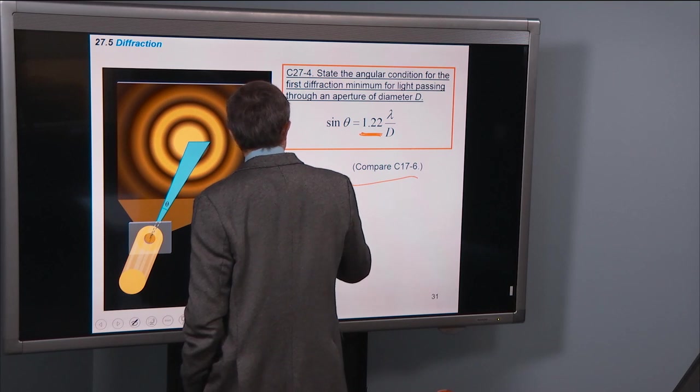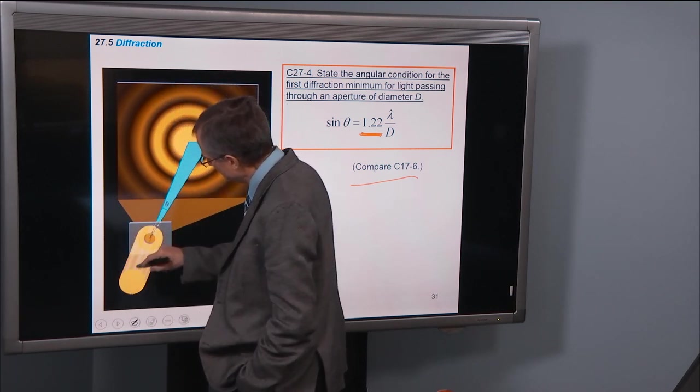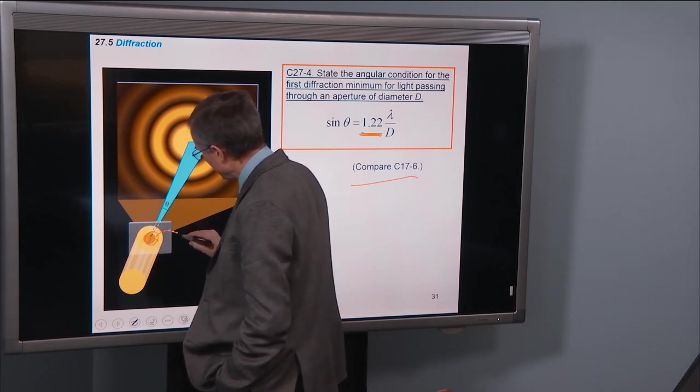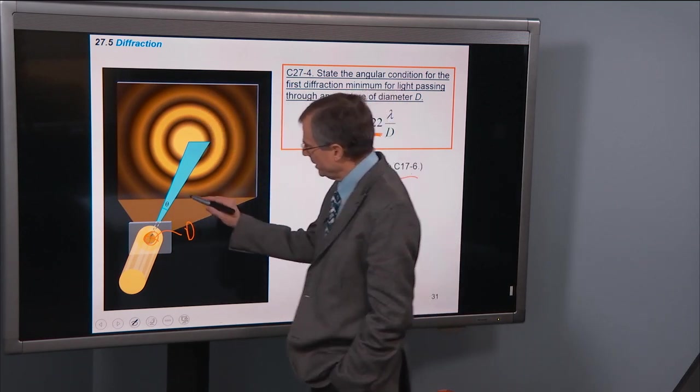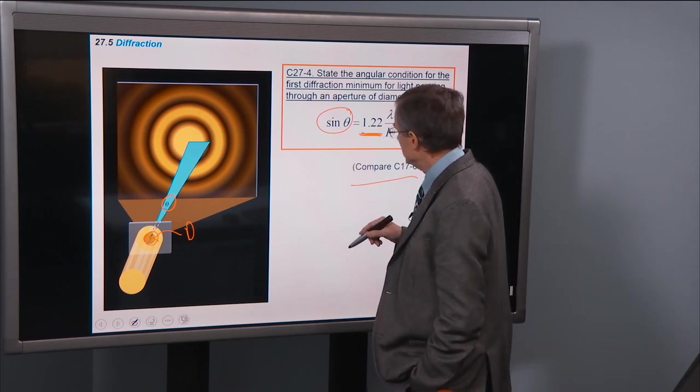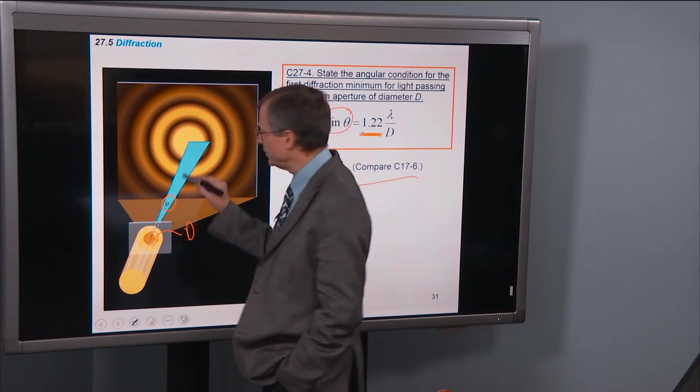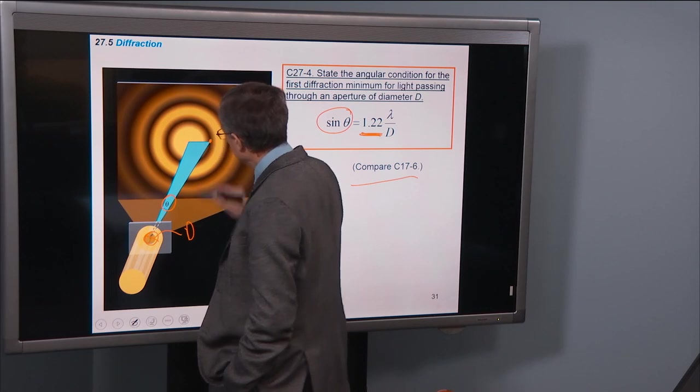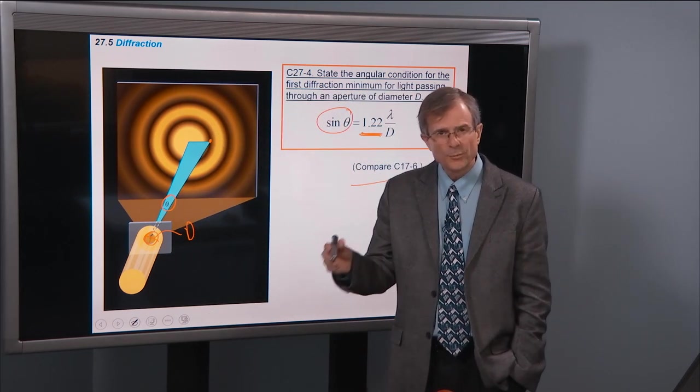And what we're talking about here, through a circular aperture, so we're passing light through this circular aperture here of diameter D, capital D, then the angle given by this equation gives the angular distance between the center of this spot on the screen and the first minimum in the diffraction pattern.